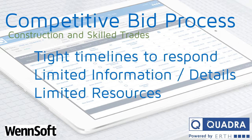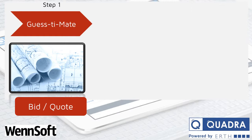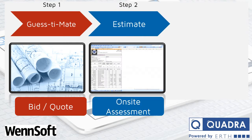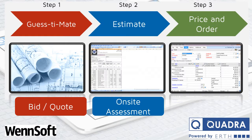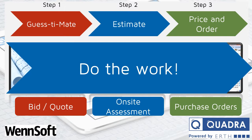We call this the guesstimate, estimate, and pricing process. It starts with the guesstimate, which is oftentimes what we'll do in producing our quote or our bid. If we have more detail and more time, we'll do a proper full-on estimate, but if we don't, we'll tend to put a guesstimate together. If we're awarded the job, we then do our estimate, which allows us to do an on-site visit, take all the proper measurements. Once we have all that detail, we'll produce a bill of materials, and we can do our pricing and ordering and receive all the information we need from our vendors. We do a lot before we actually do any of the work.